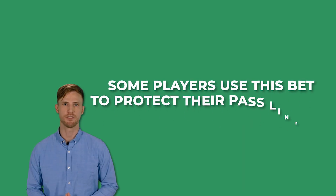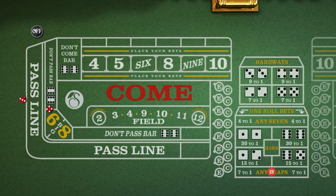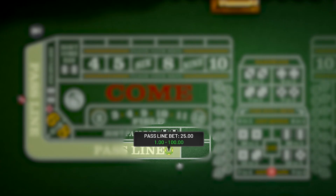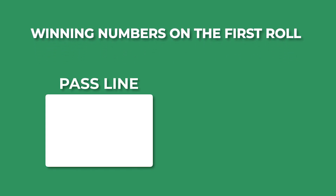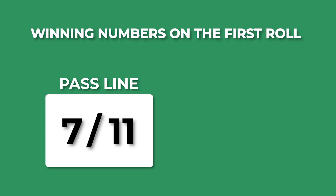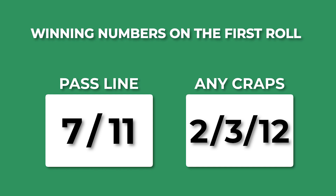Some players use this bet to protect their pass line bet during the initial roll of the shooter. By placing a smaller Any Craps Bet alongside their larger pass line bet, they hedge against losing to a 2, 3, or 12 on the next roll. That's because on the first roll of the shooter, the pass line bet wins only with 7 or 11. When you also bet on Any Craps, you include the 2, 3, and 12 to the winning numbers.